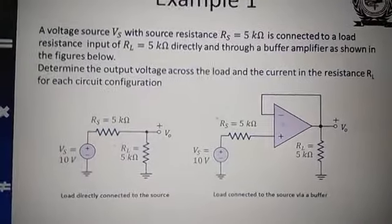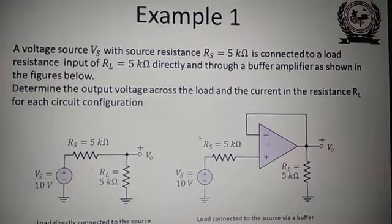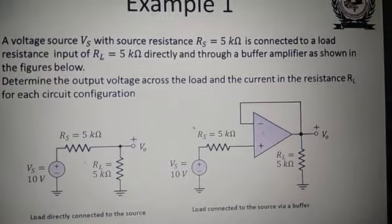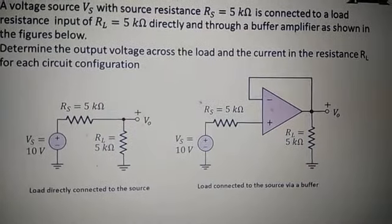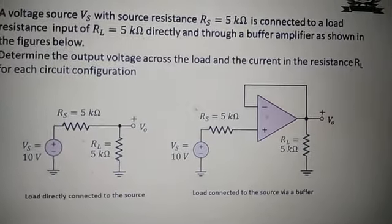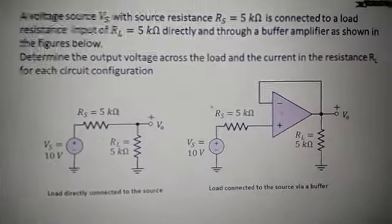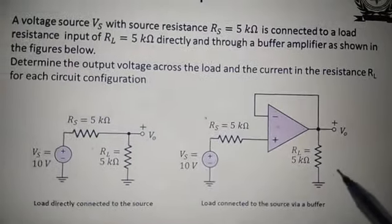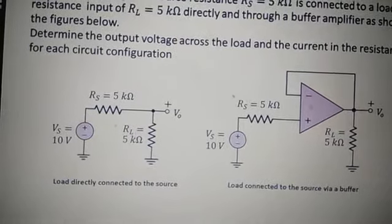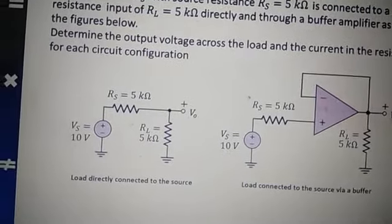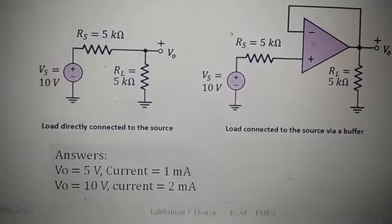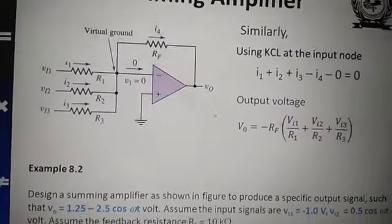A voltage source Vs with source resistance Rs = 5 kΩ is connected to load resistance Rl = 5 kΩ directly and through a buffer amplifier. With the voltage follower, the output voltage V0 comes to be 5 volt and current is 1 milliampere. If V0 is equal to 10 volt, current will be 2 milliampere.